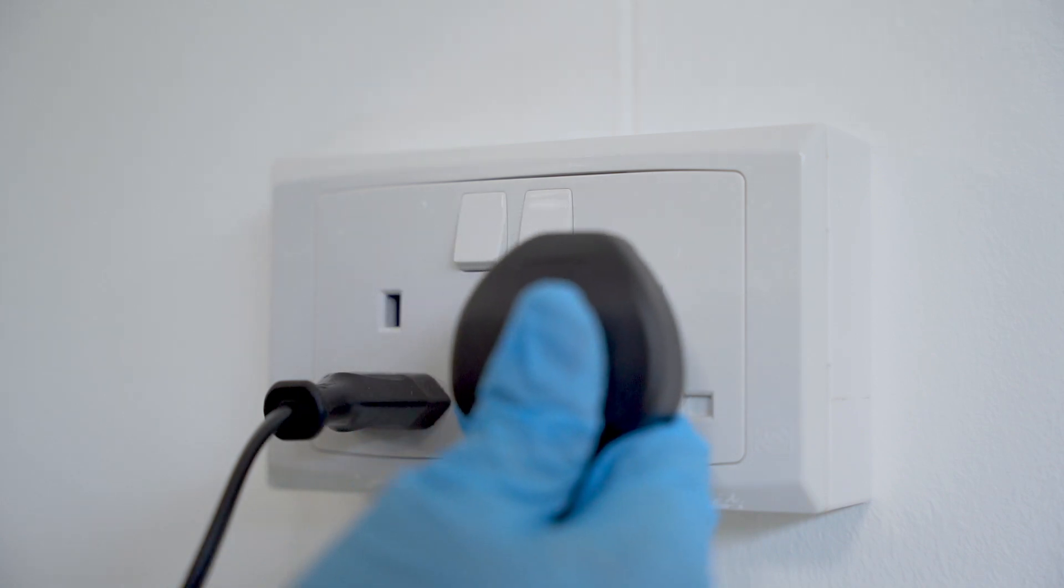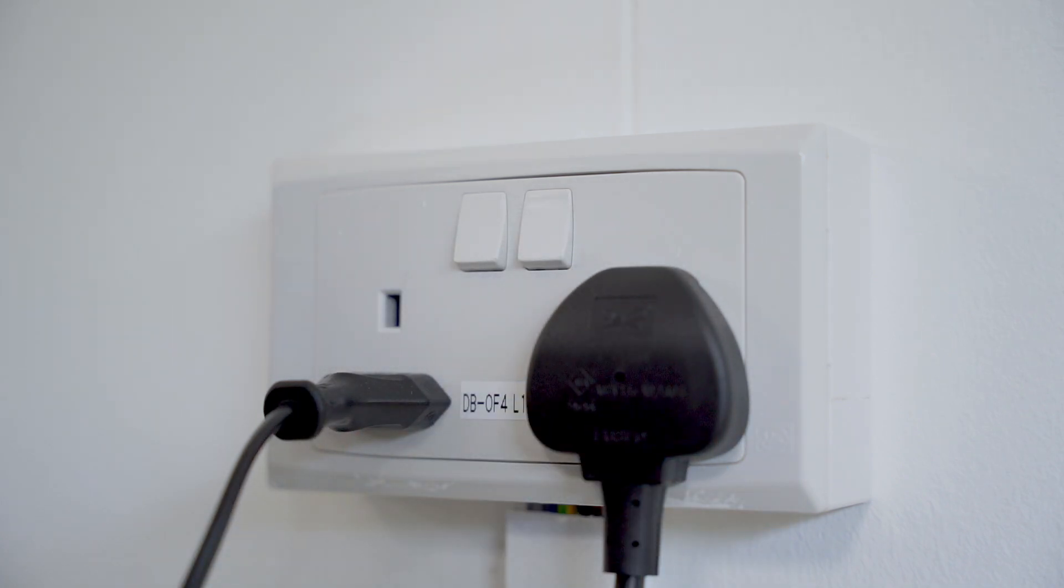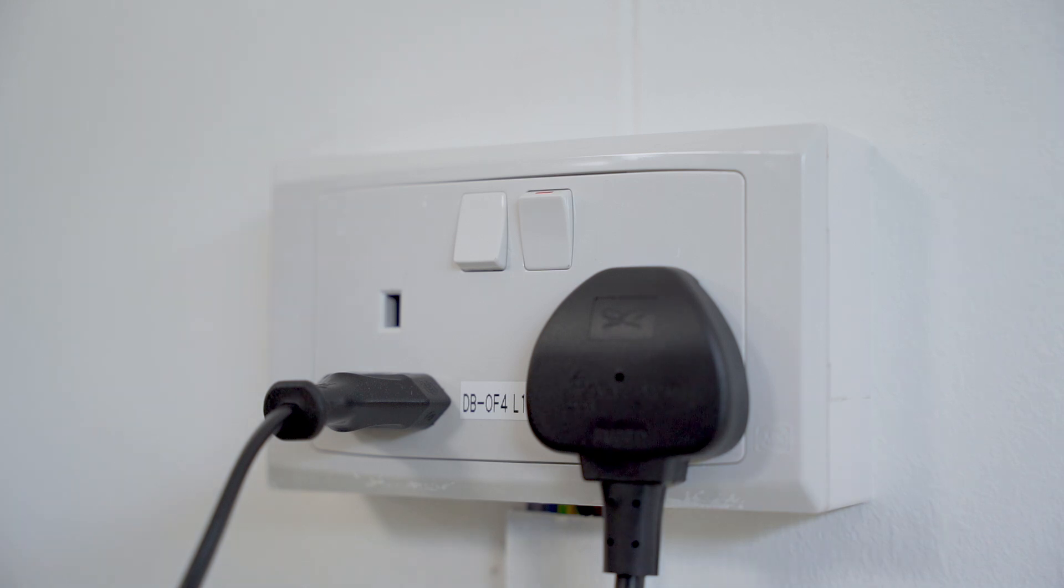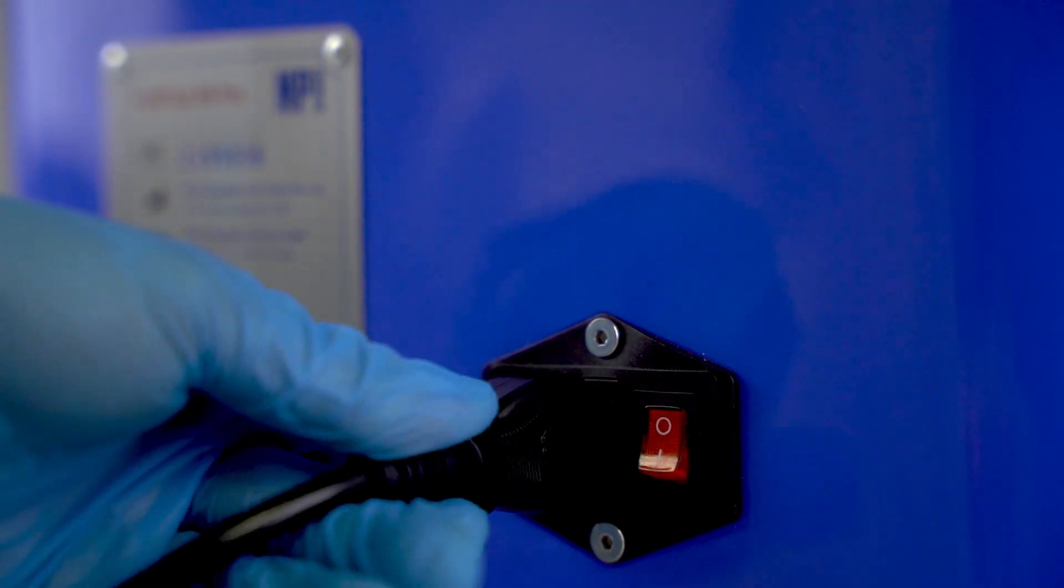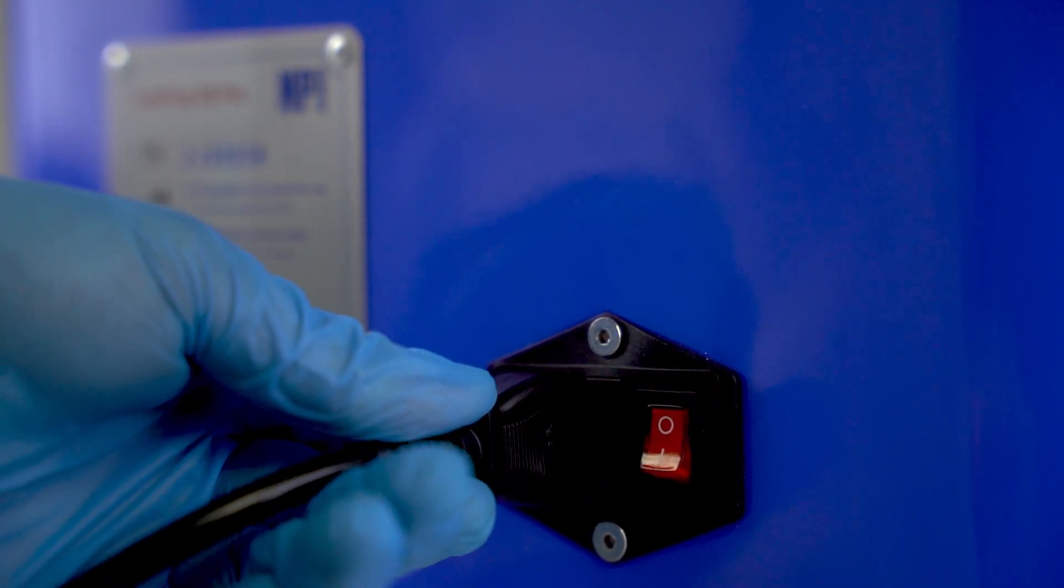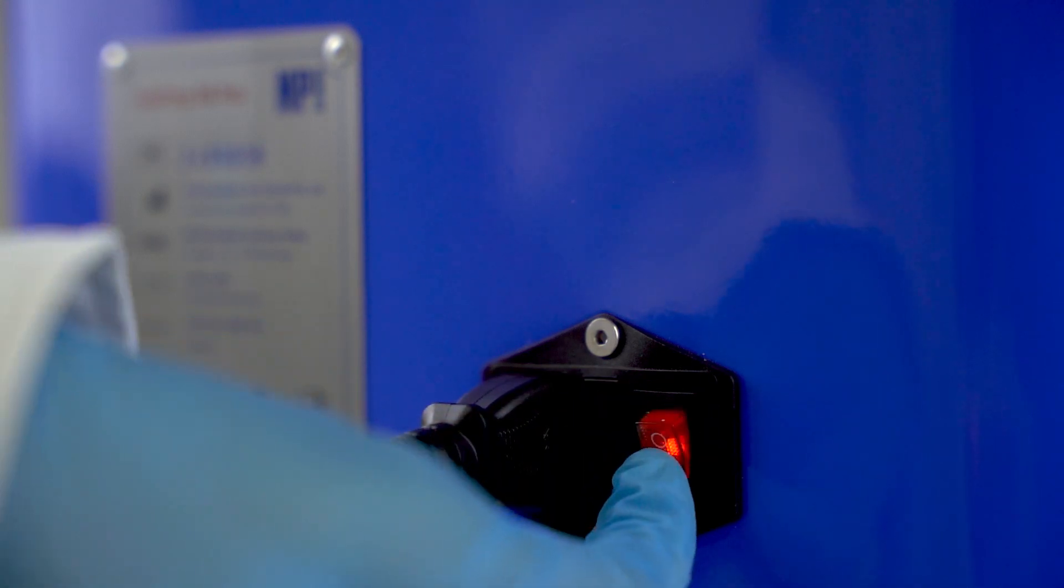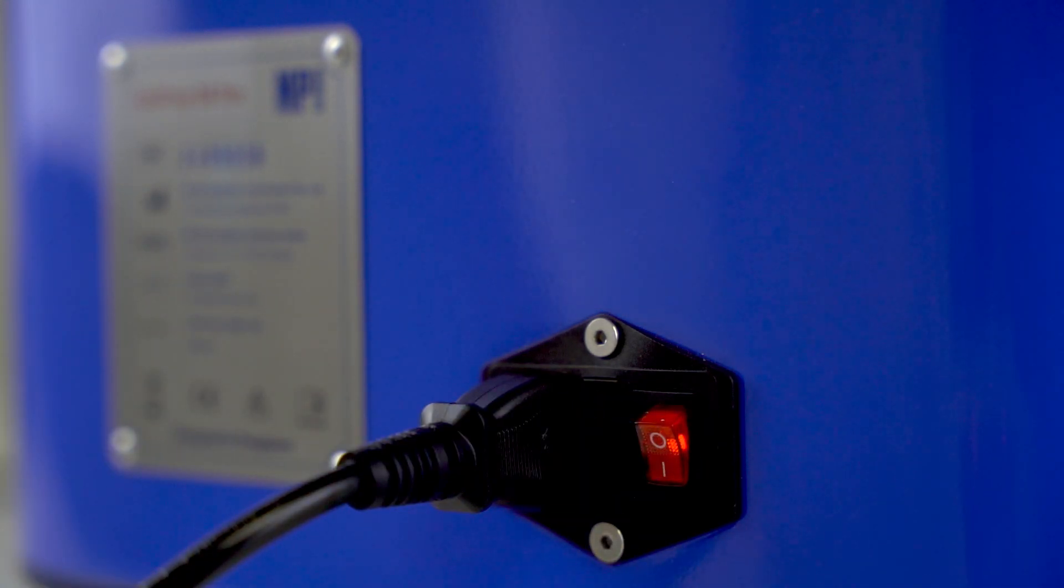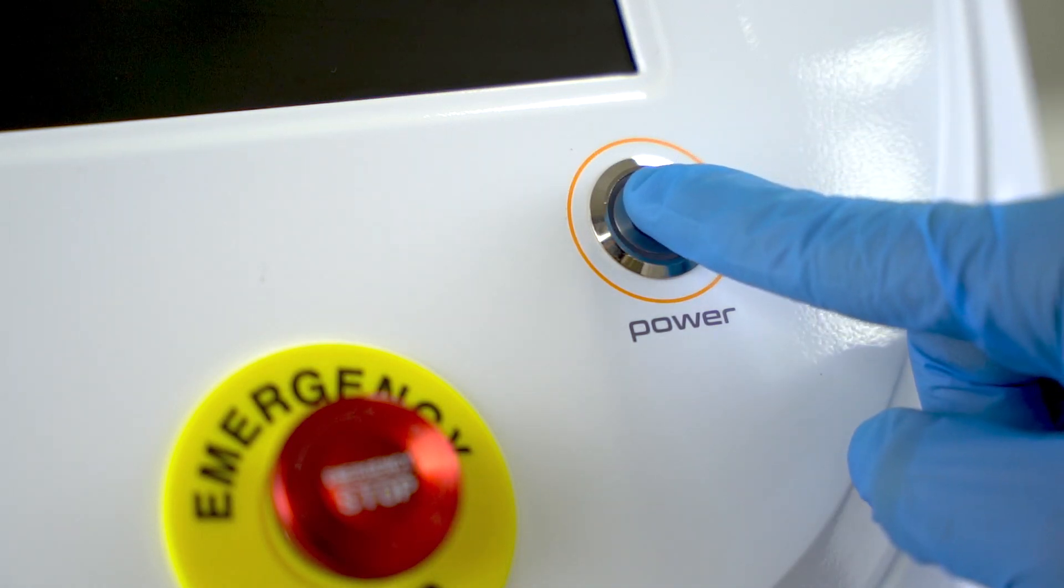Select the correct plug type for your region and attach it to the power cord. Ensure the plug is securely fitted to prevent power issues. Once connected, turn on the power switch at the back of the machine. The red light on the switch should illuminate, indicating the machine is powered on. Press the front power button to activate the machine's interface.